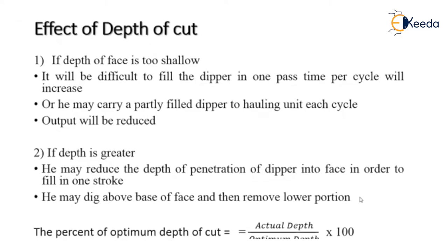There are formulas used for optimum depth calculation. The percentage of the optimum cut is calculated as the actual depth divided by the optimum depth, multiplied by 100. This gives the value of optimum depth as a percentage.